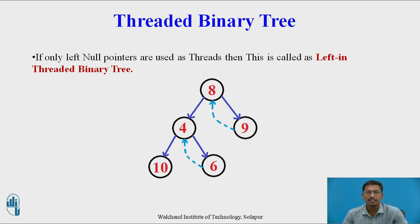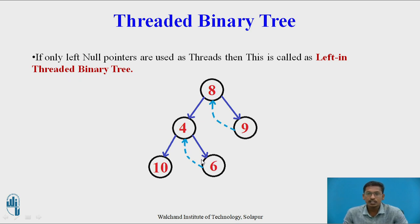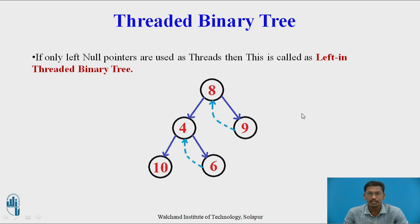This is an example of a threaded binary tree. If only left null pointers are used for storing addresses as threads, this threaded binary tree is called a left-in threaded binary tree. Left null pointers are replaced with in-order predecessors. For example, the in-order predecessor of 9 is 8, so the left null pointer of 9 stores the address of node 8. Similarly, the in-order predecessor of 6 is 4, so 4's address is stored in the left child of 6. This tree is called a left-in threaded binary tree.